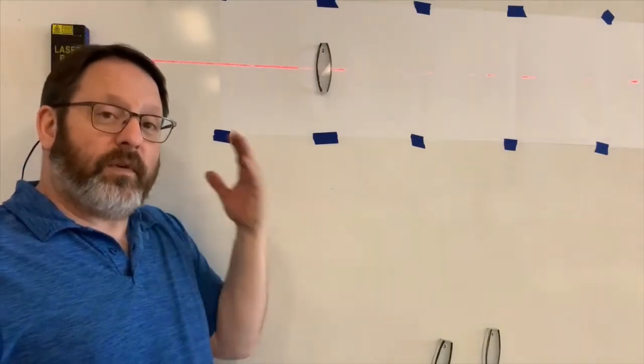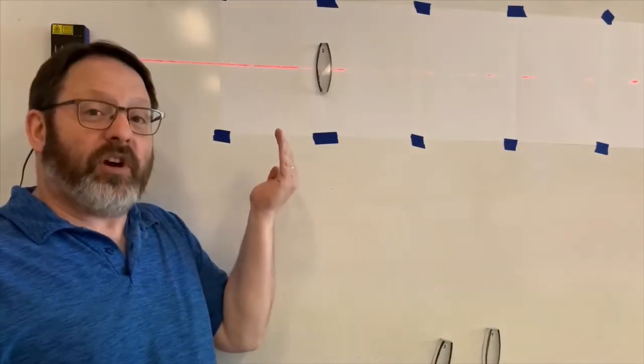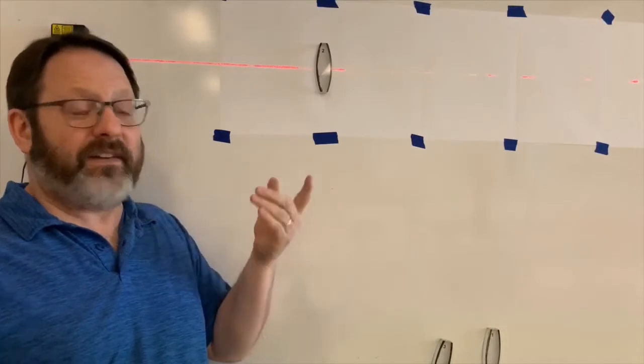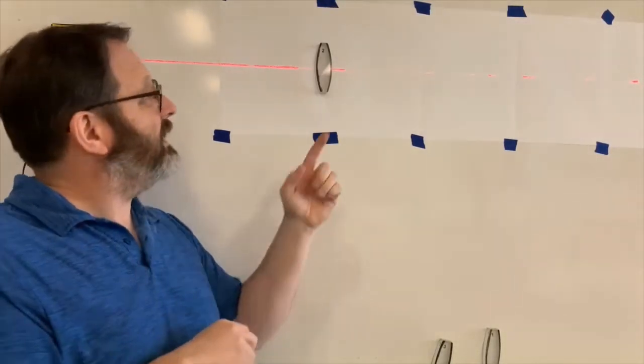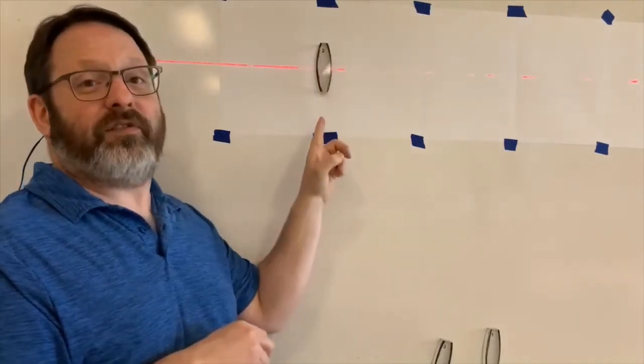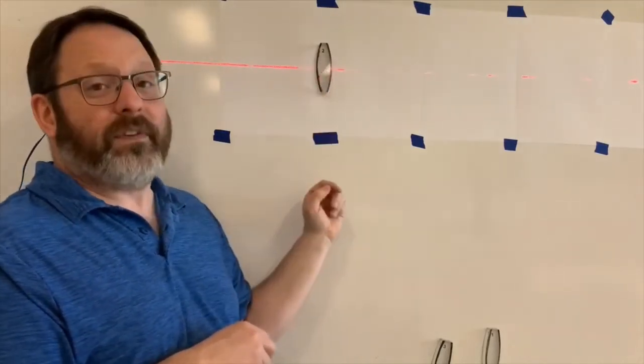When we started thinking about mirrors, we started with flat mirrors, and then we went to curved mirrors. And this time again, I started with a block, just flat surfaces of acrylic. Now I've got a block with curved surfaces of acrylic, and this forms a lens.